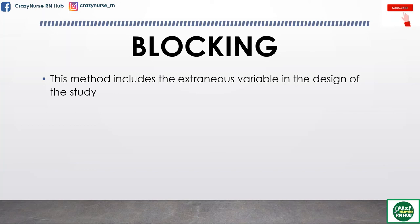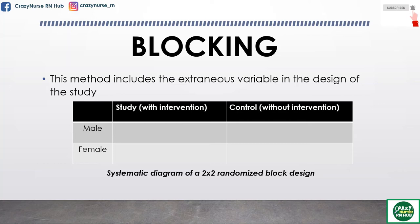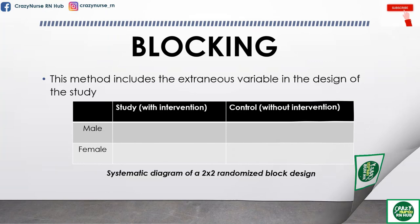Another one is blocking. This method includes the extraneous variable in the design of the study. For example, in the physical training program, if gender were thought to be a confounding variable, it could be built into the study design as shown in the systematic diagram of a 2x2 randomized block design. In this design, we have two groups — the study group with intervention and the control group without intervention — and two rows representing gender: male and female. In any study where an intervening variable such as age is considered a difficulty, entering age as part of the design could control that variable.